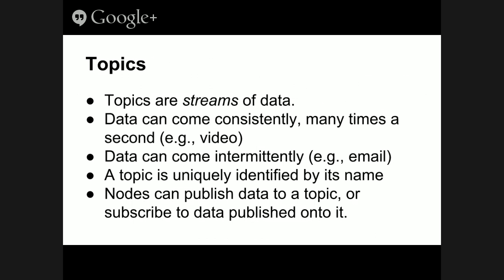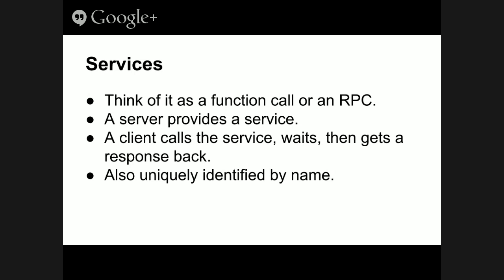A topic is identified by just a string — some name it has — so you have to take care not to collide with your names. The other way nodes can communicate is called services. Services are more familiar — they're basically like function calls or remote procedure calls. You give it a request and get a response back. This is kind of like a web server that offers a service where you make a request for a web page and it sends you one back.